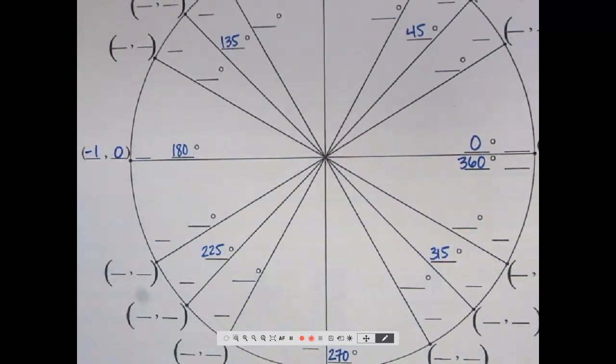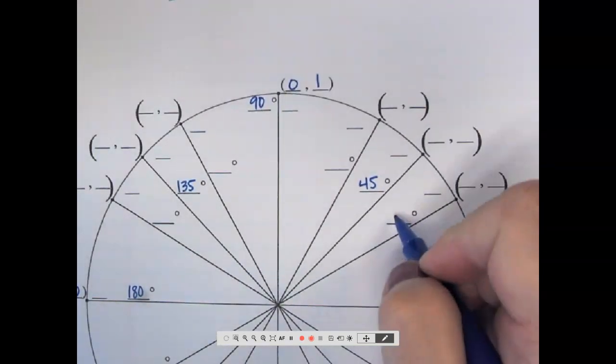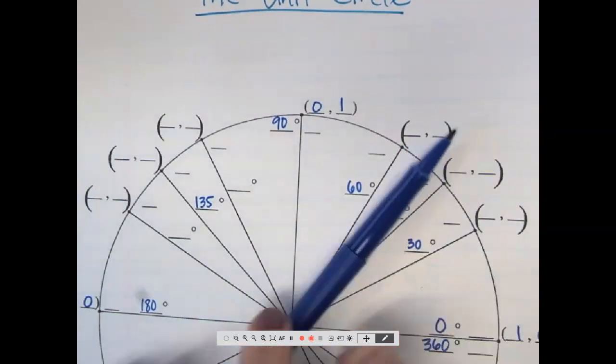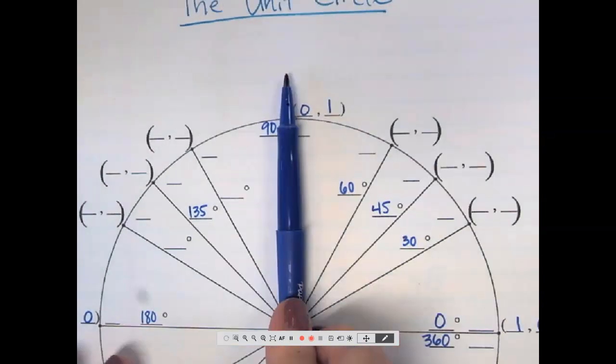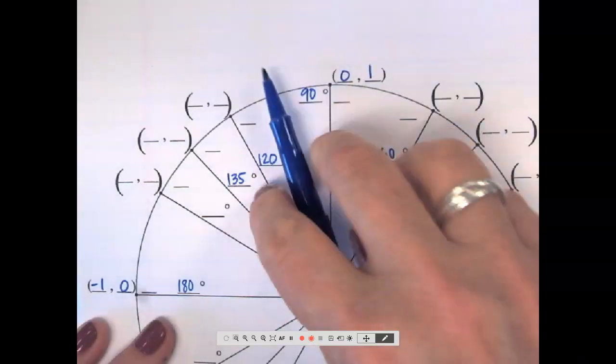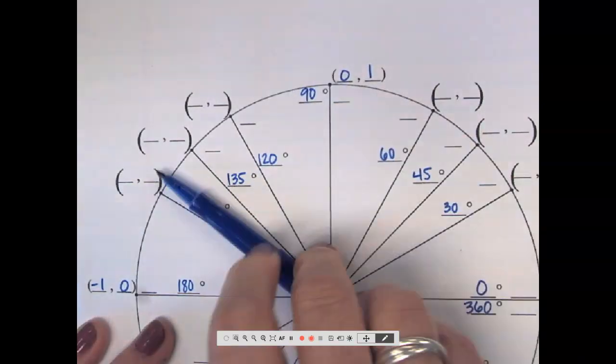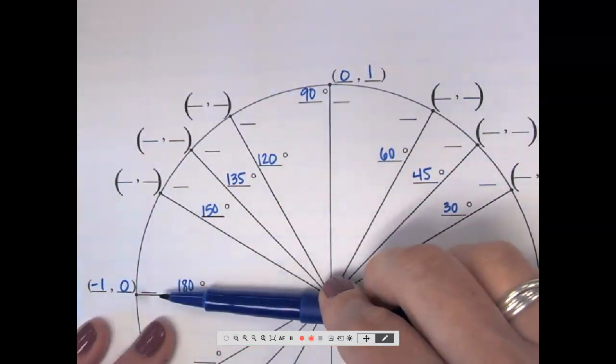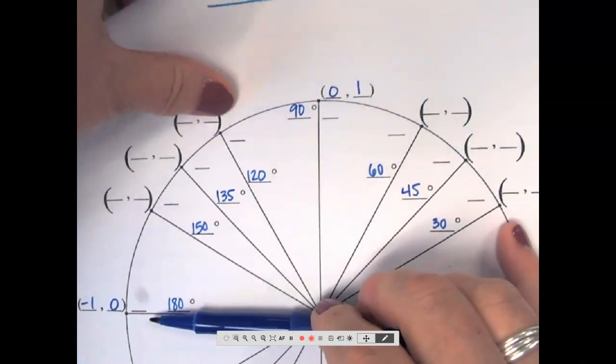So we're filling in all increments of 30 degrees. I've got 30 here, and then that puts me at 60, plus 30 more is 90, plus 30 more is 120, plus 30 more is 150, plus 30 is 180. We're going to keep going.